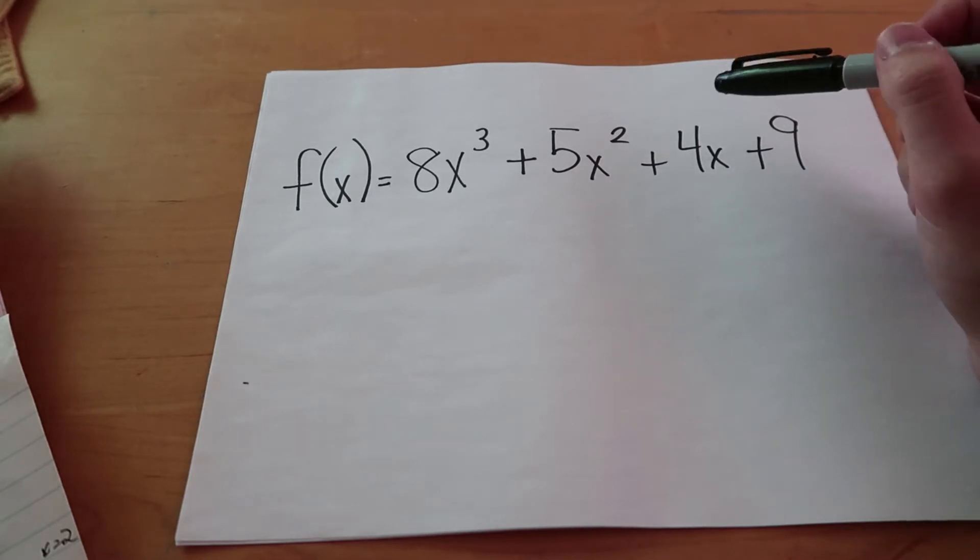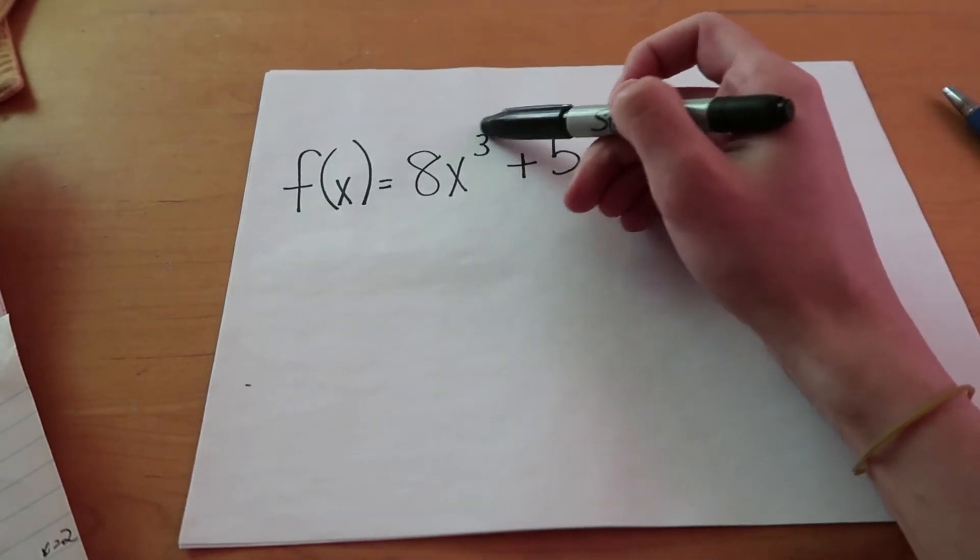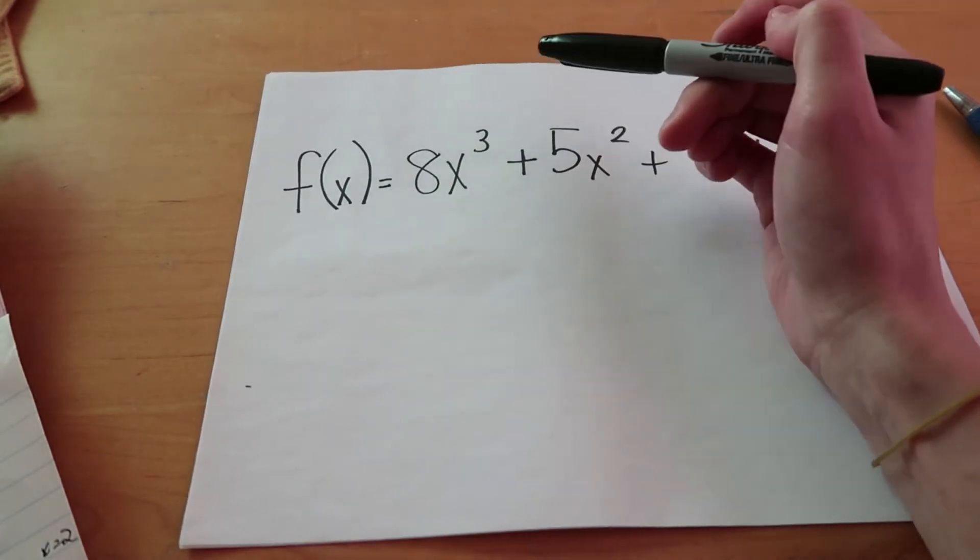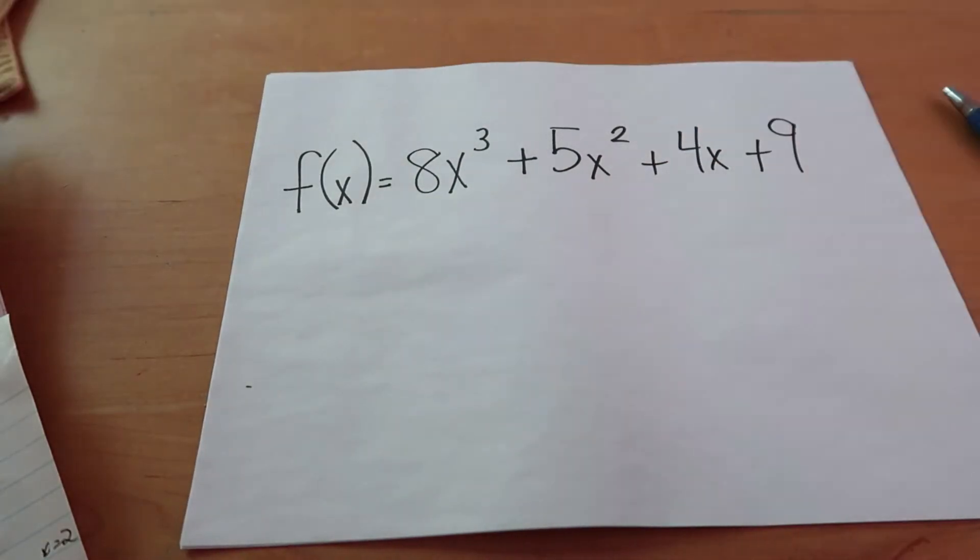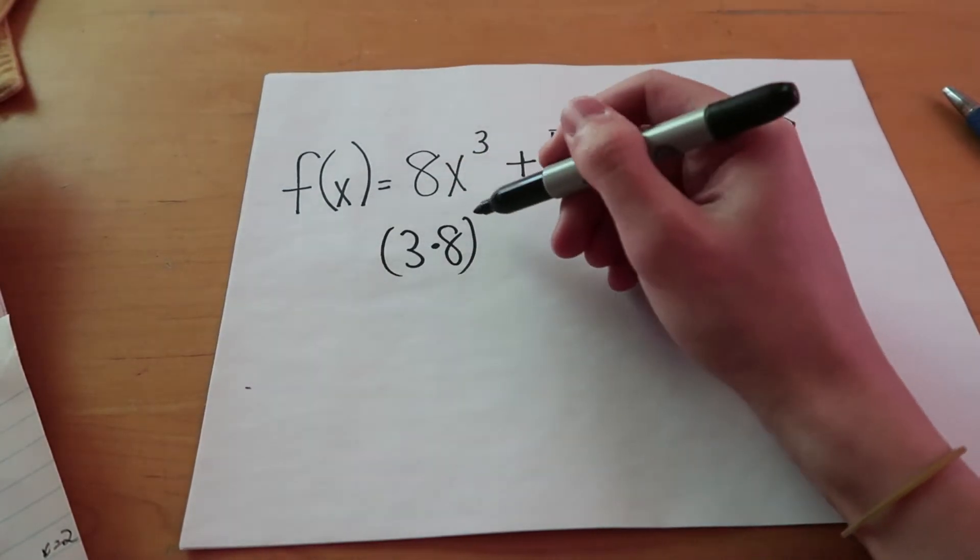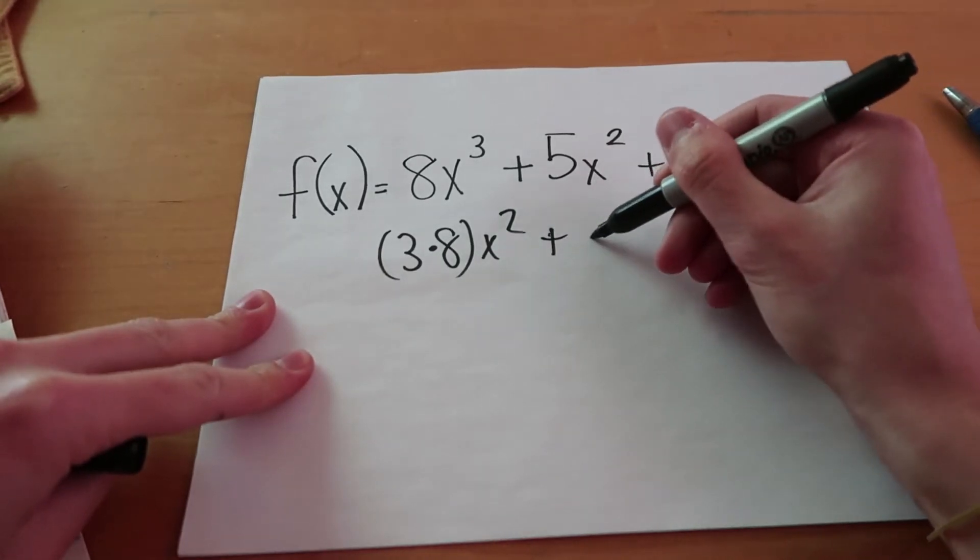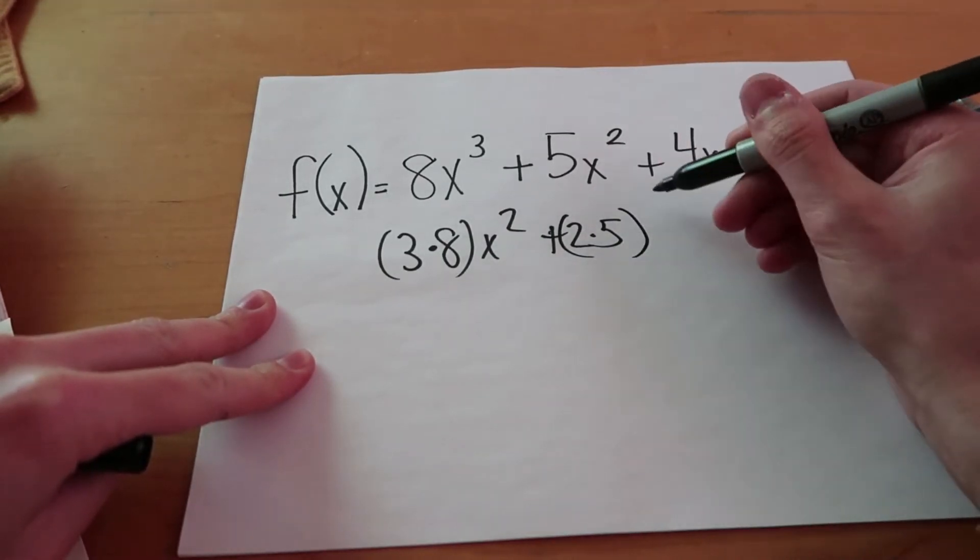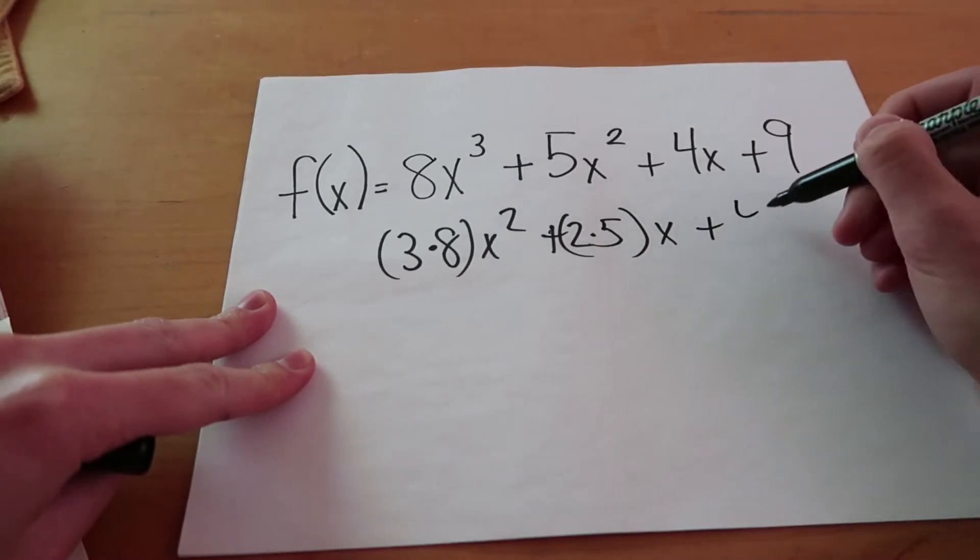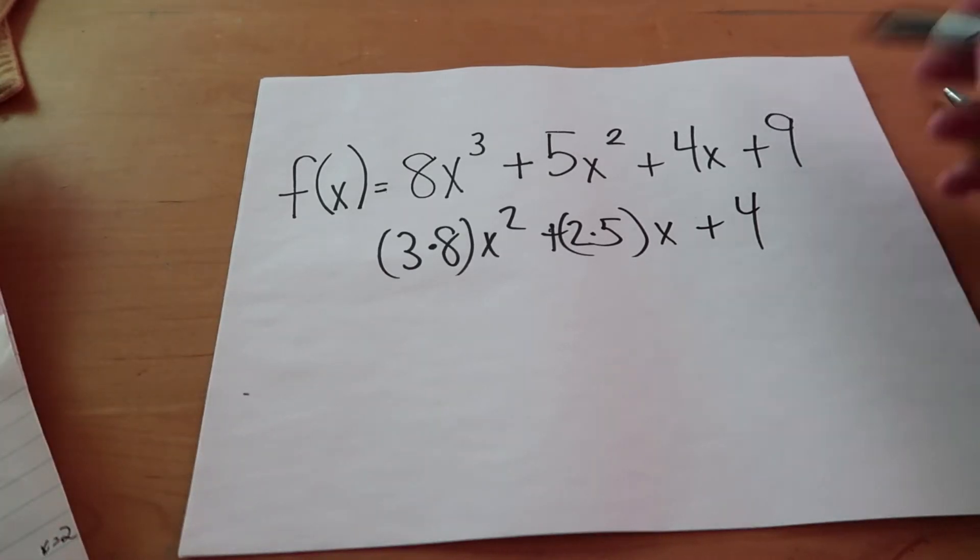So let's first get the derivative by hand, we're going to use the power rule. We're going to subtract one from the exponent or bring the exponent to the front, multiply and then subtract one from the exponent. So we'll just end up doing something like 3 times 8 and then x squared. This will be plus 2 by 5 and then x and then plus 4 and then we can just scratch out those loose terms there.